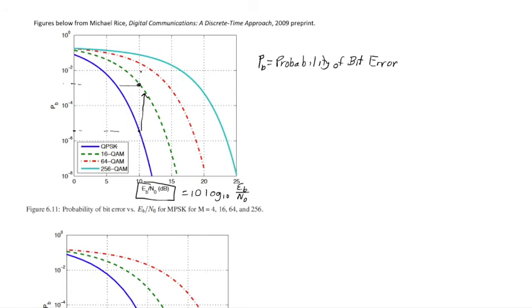It would go up to something like maybe 2 times 10 to the minus 2. So the probability of bit error is going up as M increases. I should mention that this is incorrect. It's M-QAM on this figure.